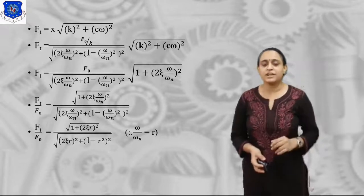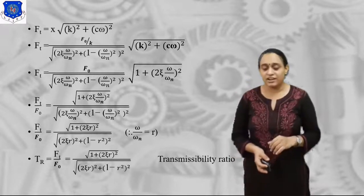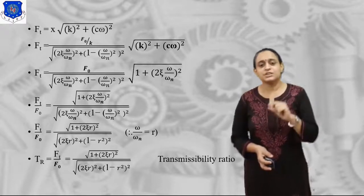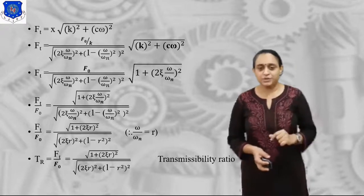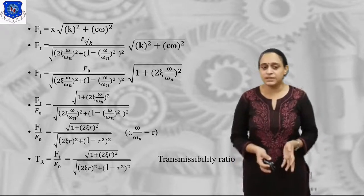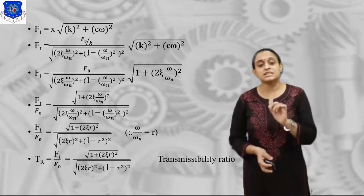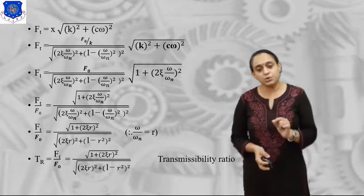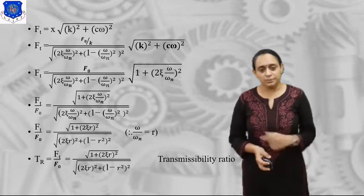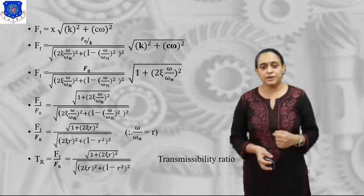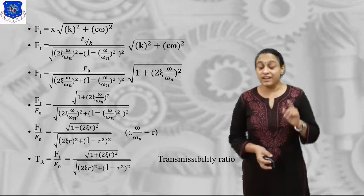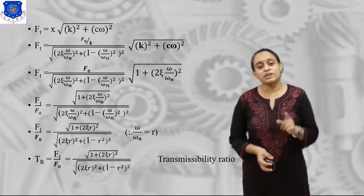So the transmissibility ratio TR = Ft/F0 = √(1 + (2ζr)²) / √((2ζr)² + (1 − r²)²). You have to note this down in your notebook and remember it because it is useful for solving numericals. This is the theory of the transmissibility ratio.